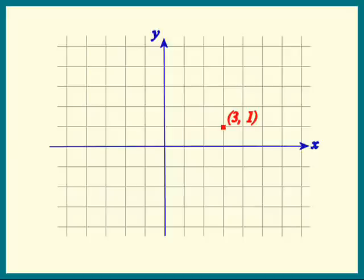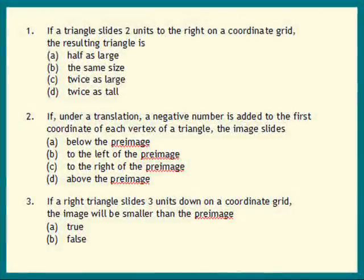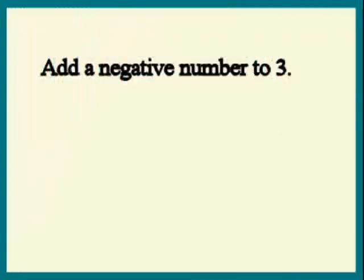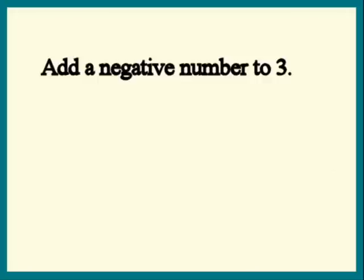So now let's look at the problem. It says what happens if we add a negative number to the first coordinate? Let's do that separately. We have to add a negative number to three. You know how to add a positive number, right?